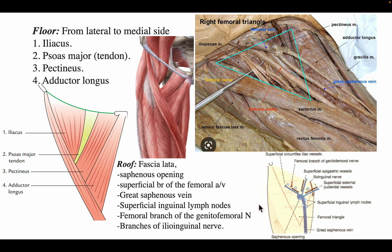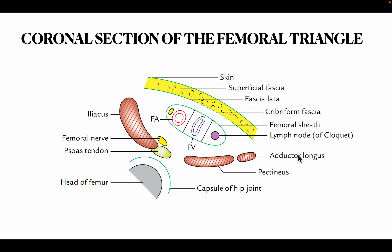The roof of the femoral triangle is formed by the fascia lata. Structures present in the roof include the saphenous opening, superficial branches of the femoral artery and veins, the great saphenous vein, superficial inguinal lymph nodes, femoral branch of the genitofemoral nerve, and a branch of the ilioinguinal nerve. In the coronal section diagram, you can see how the roof is formed by skin, superficial fascia, and fascia lata, with a cribriform fascia present in the saphenous opening.